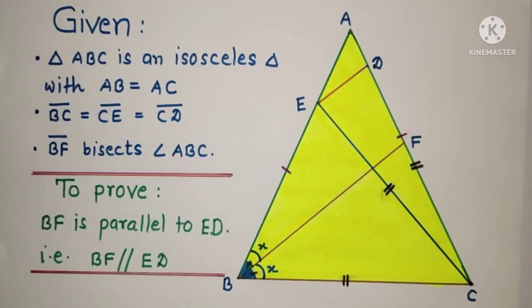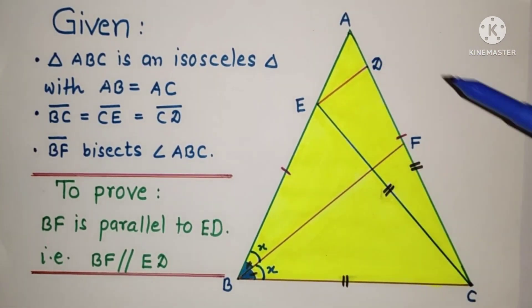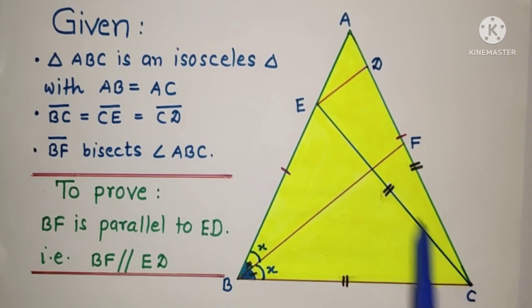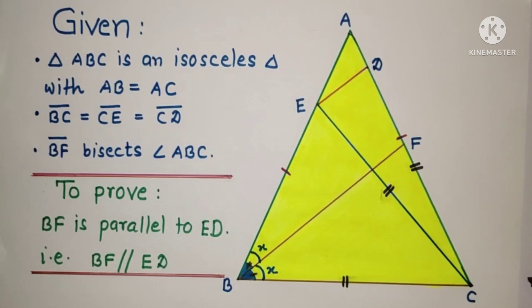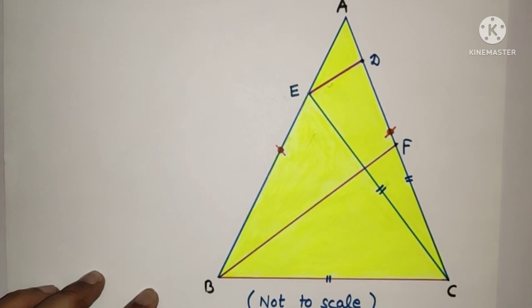Welcome again to my YouTube channel. This time we will discuss a 9th grade geometry problem. We are given an isosceles triangle ABC in which AB equals AC. BC equals CE equals CD are given, and BF is the angle bisector which bisects angle ABC. We have to prove that BF is parallel to ED.